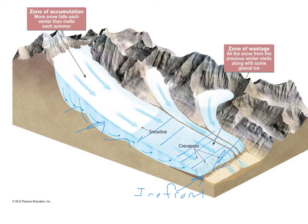Later on today we're going to talk about cirques, which form up here in the zone of accumulation. We're also going to talk about aretes, which are these blade-like features that separate valleys.